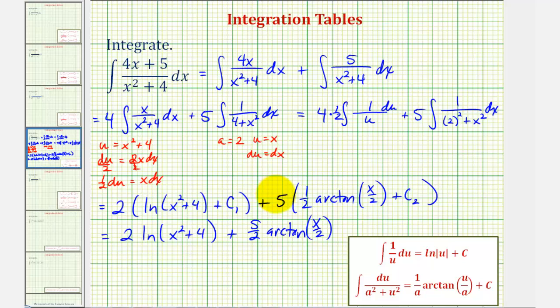Well two times c sub one, and five times c sub two is just another constant. So if we let c equal two times c sub one plus five times c sub two, we can just put plus c here. So this would be our antiderivative. I hope you found this helpful.